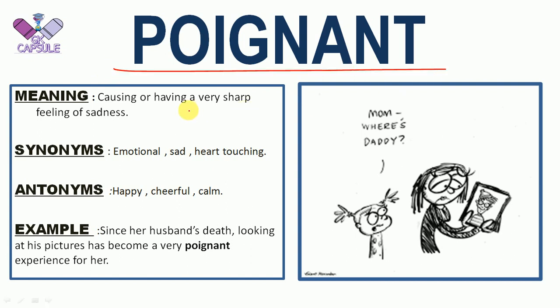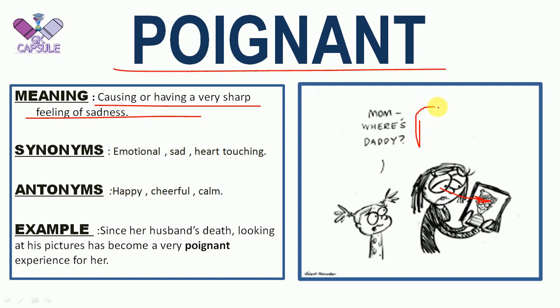The next word of our discussion is POIGNANT. The meaning of POIGNANT is causing or having a very sharp feeling of sadness. In the picture you can see a lady missing her husband and feeling very sad, so we call it a poignant situation.